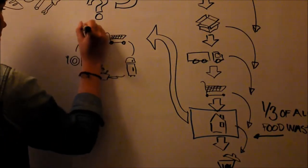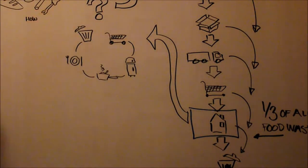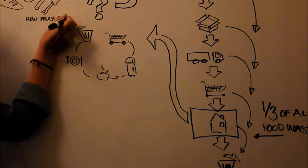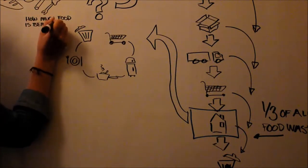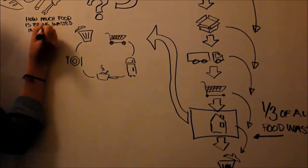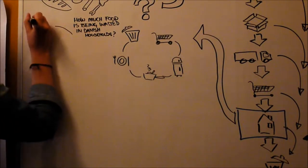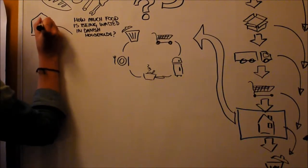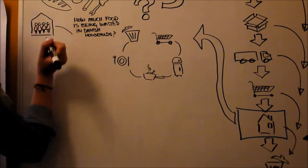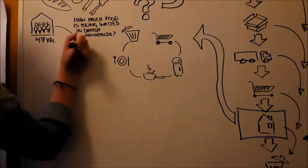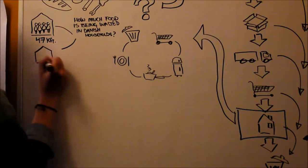This includes shopping, storing, cooking, eating and the disposal of food in private households. The question we asked ourselves was, how much food does a normal household actually throw out? We found it depends a lot on the size of households. Generally, a household with four or five people wastes around 47 kilos of food every year, whereas a single household wastes twice as much.